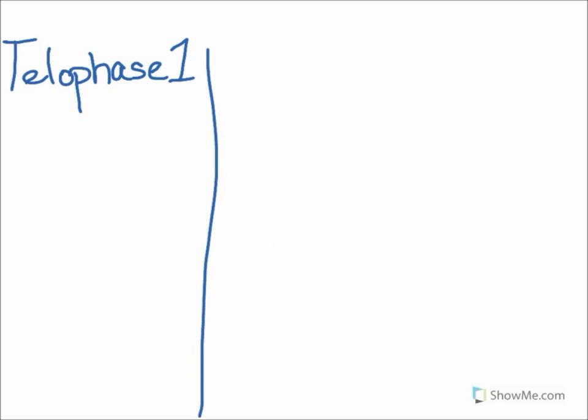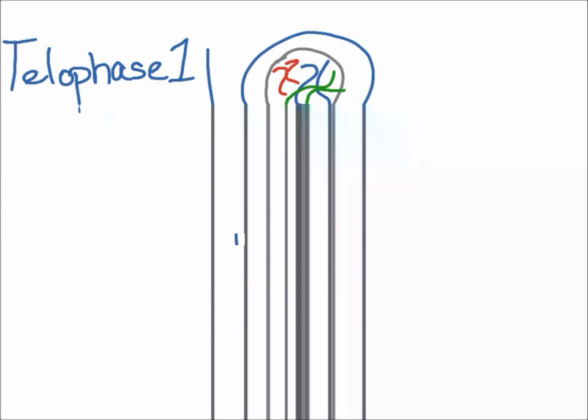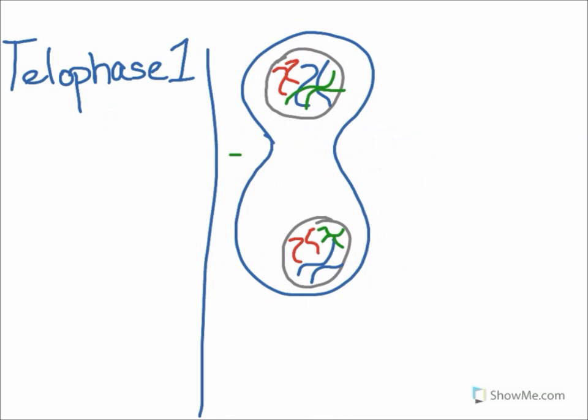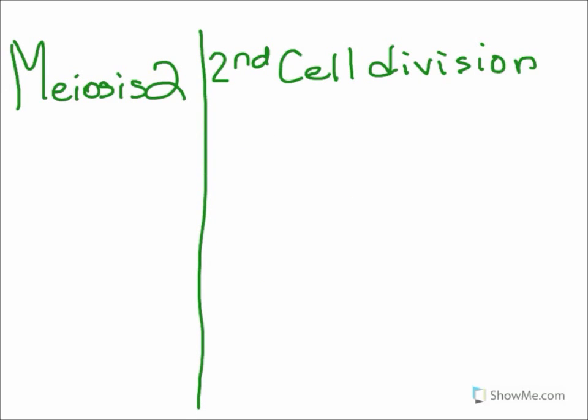The last phase of meiosis I is telophase I. During telophase I, the spindle fibers dissolve and the chromosomes unwind. The nuclear envelope reforms and gradually the cell divides into two new cells. But meiosis is not over yet because the two cells created after meiosis I still have a complete set of chromosomes. To form gametes, or sperm and egg cells, the cells need to have one half of the chromosomes of a normal cell. So the cell gets ready to divide again.